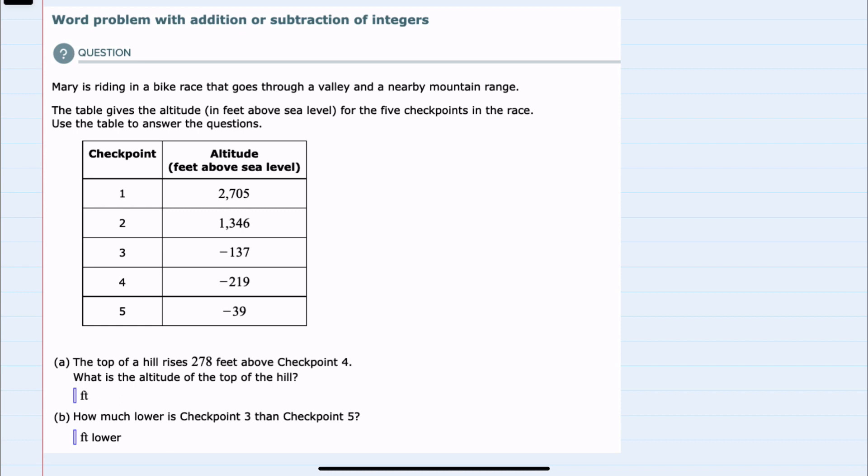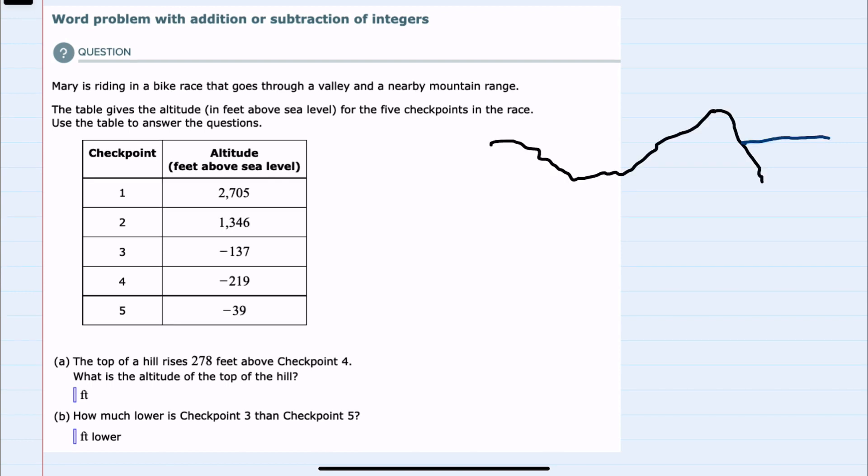Here we're told that Mary is riding a bike that goes through a valley and a nearby mountain range, and we're given a table with altitude at five different checkpoints. We could imagine this valley and mountain range having some points above sea level but also some points below sea level.